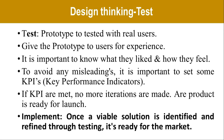Once prototyping is done, we move to the next phase: Test. In this stage, the prototype is tested with real users. The prototype is given to users for experience and it is important to know what they liked and how they felt. To evaluate the product and avoid any misleadings, it is important to set some Key Performance Indicators, abbreviated as KPIs. If the KPIs are not met, the product will be sent for modifications. If the KPIs are met and no more iterations are needed, the product — meaning the MVP — will be ready for launch. No product can be launched without passing through this test phase.